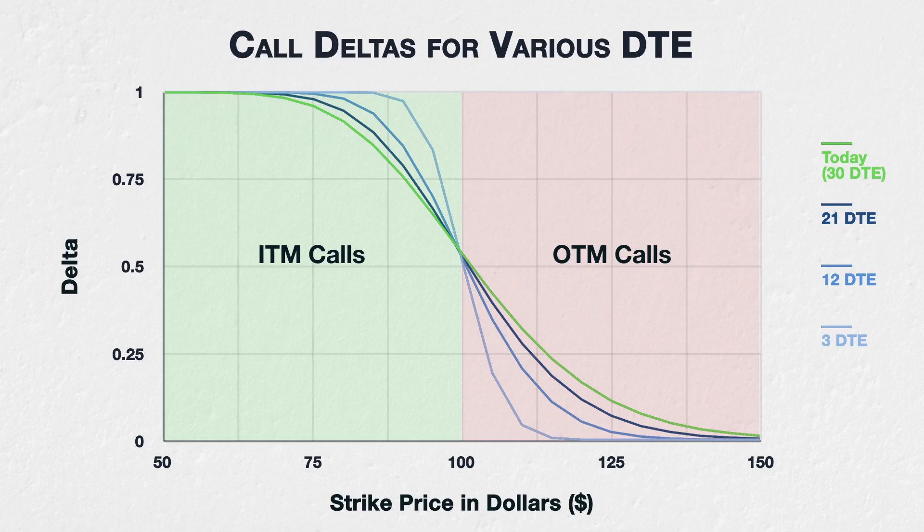Remember, at expiry it is only the in-the-money options that will have any value, and it's the implied probability of being in-the-money at expiry that is affecting the deltas here. For in-the-money options, a higher days to expiry increases the implied probability that it will no longer be in-the-money at expiry, thus lowering the delta. For out-of-the-money options, a higher days to expiry increases the implied probability that it will become in-the-money at expiry, thus increasing the delta compared to if there were less time until expiry.